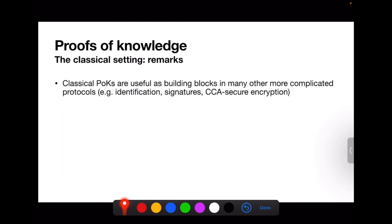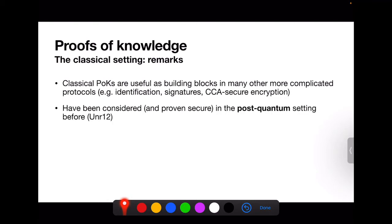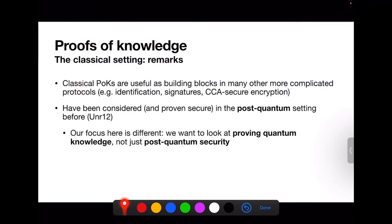Classical proofs of knowledge are useful as building blocks in many other protocols, such as identification protocols, signatures, and CCA-secure encryption. They have been considered and proven secure in the post-quantum setting — for example, see Unruh's 2012 paper. Our focus here is different: we want to look at proving quantum knowledge, not just post-quantum security. It means the witness will be a quantum state instead of a classical string.